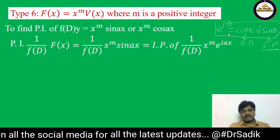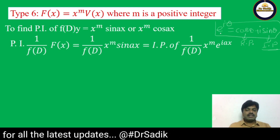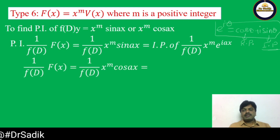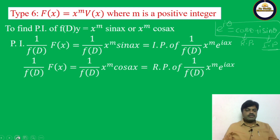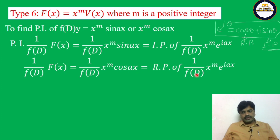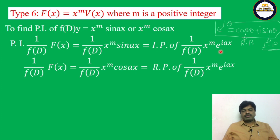Similarly, if there is cos(ax), it can be written as the real part of (1/f(D)) · x^m · e^(iax). So to summarize: if it is sin(ax), write imaginary part of e^(iax); if it is cos(ax), write real part of e^(iax), using the basic formula e^(iθ) = cosθ + i·sinθ.